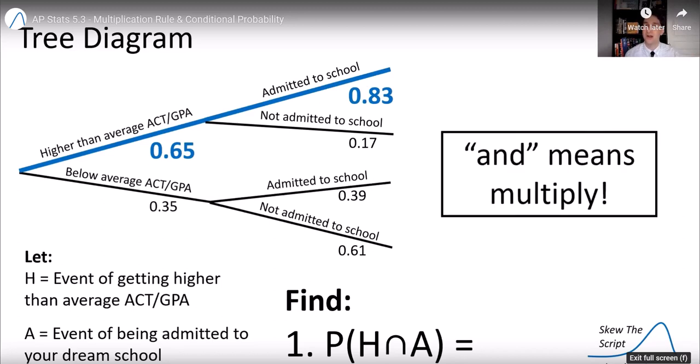So remember our intuitive probability rule, AND means multiply. So we're going to take those two probabilities and we're going to multiply them. When we multiply again, we get an overall probability of 0.54. So there's a 54% chance of both these events happening.